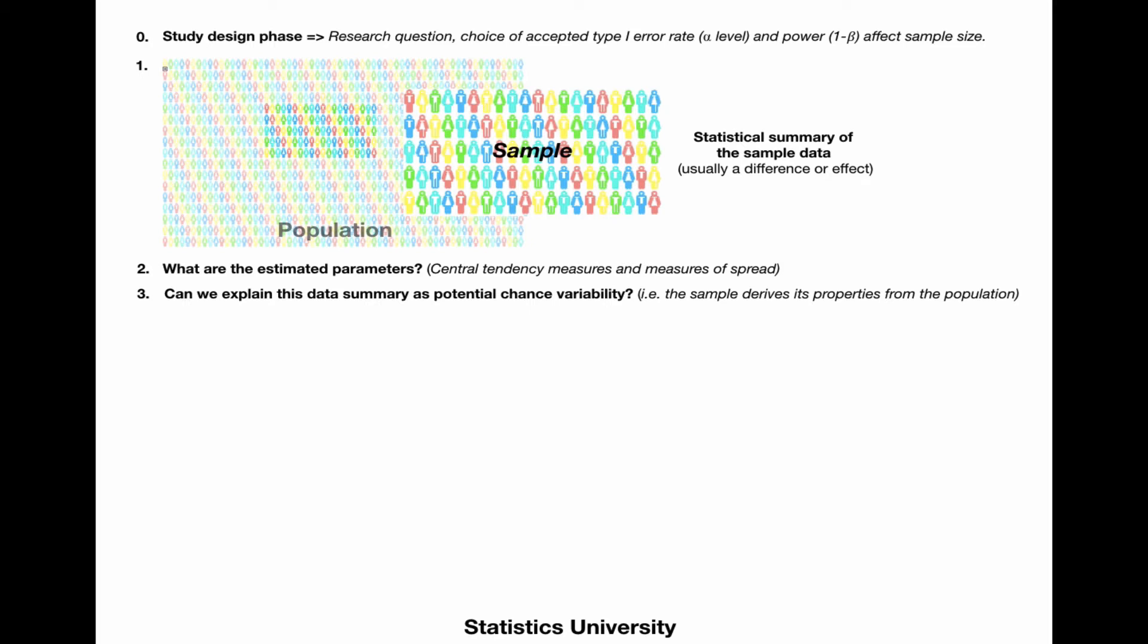After we've estimated those parameters, we want to know whether we can explain these data summaries as potential chance variability, or whether we should say that, for example, a difference that we have found in our study is actually true. If we would rephrase that, we can also ask whether the sample derives its properties from the population or not.